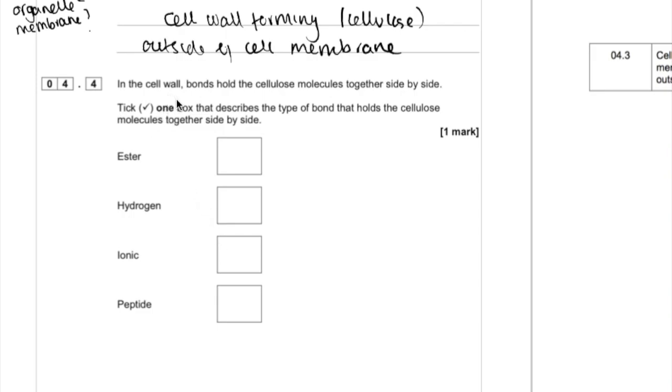And finally, in the cell wall, bonds hold the cellulose molecules together side by side. Tick one box describing the type of bond that holds the cellulose molecules together side by side.